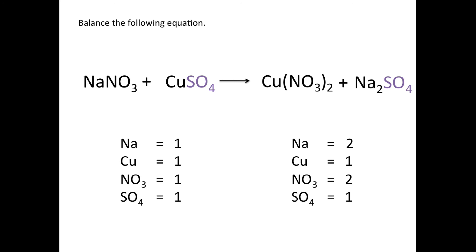Starting with sodium: I have one on the reactant side and two on the product side, so I'll put a 2 in front of sodium nitrate on the reactant side. That changes sodium to two and also changes the number of nitrate groups to two — matching the product side. An equation that looked fairly complicated turned out to be simple to balance. Thanks for watching the Chemistry Solution. If there are other topics you'd like covered, feel free to email me at missy@thechemstrysolution.com.